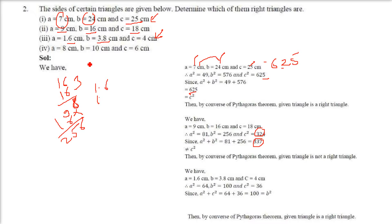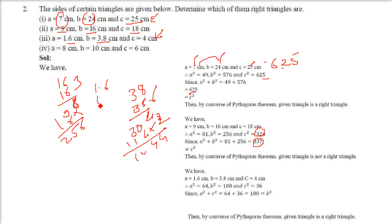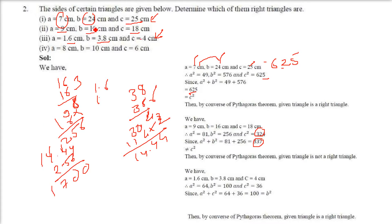Adding 14.44 and 2.56 gives 17. Now, 4 squared is 16. Since 17 is not equal to 16, this triangle is not a right angle triangle. But in the 4th case, if you see 8 square plus 6 square: 64 plus 36 adds up to 100, and 10 squared is also 100. So the 4th set — sides 8, 6, 10 — is a right angle triangle.